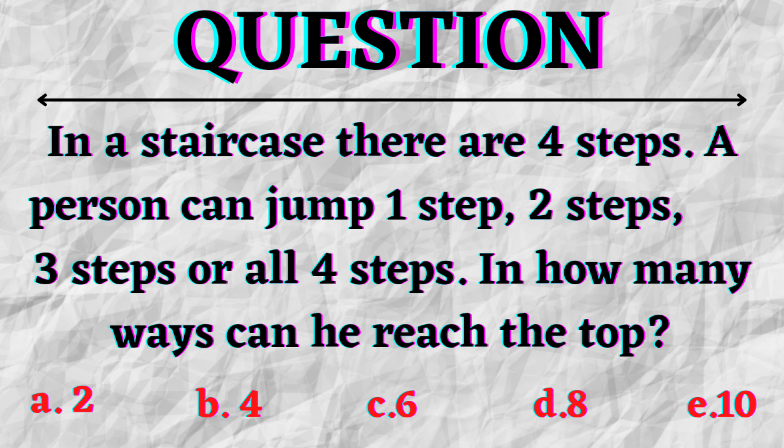Now as you can see from the title of this video, in this video we'll solve this problem which states that in a staircase there are four steps. A person can jump one step, two steps, three steps, or all four steps. In how many ways can he reach the top? And we are given five options: 2, 4, 6, 8, and 10.